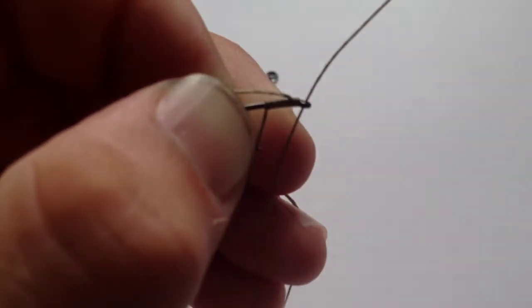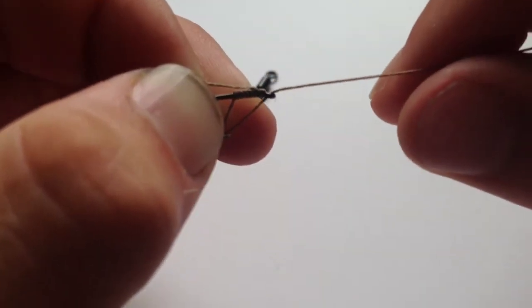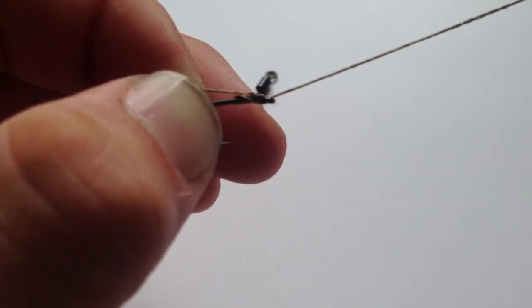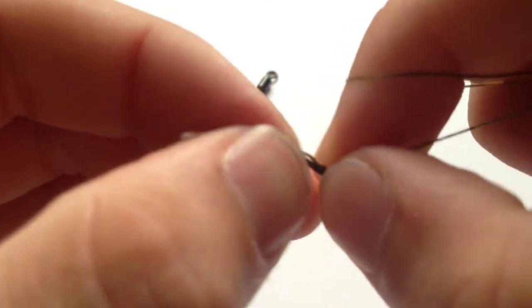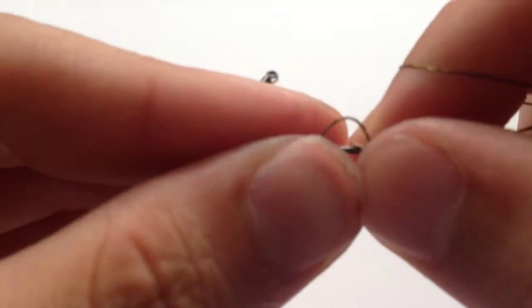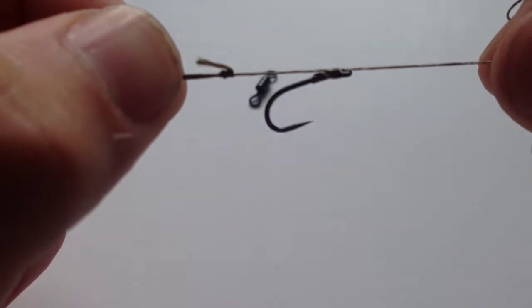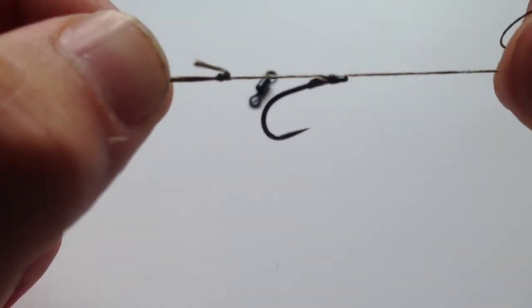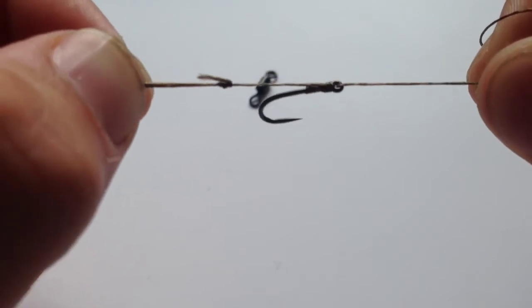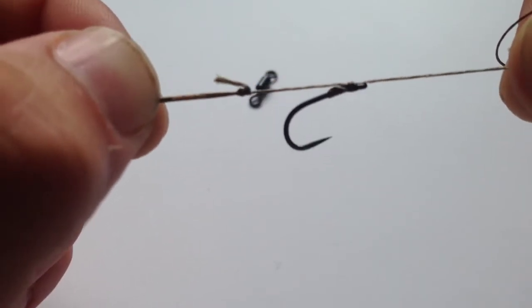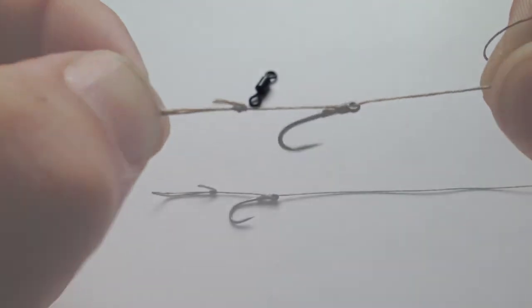When you've done that, pull it fairly tight. As you can see, you've created a knotless knot with quite an aggressive hooking angle. That's a really strong, simple knot that almost anyone can tie.